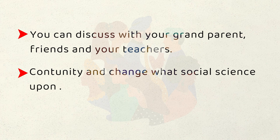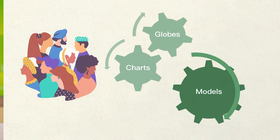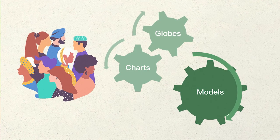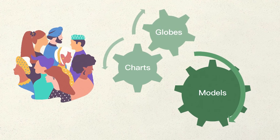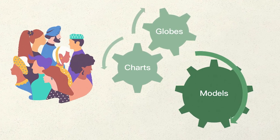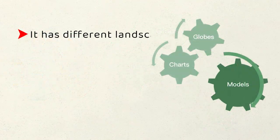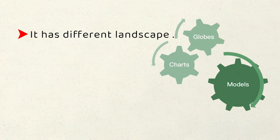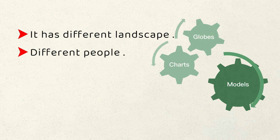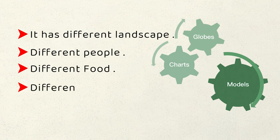We are a country blessed with diversities — diversities of cuisine, diversity of language, diversity of food. When you prepare models and charts, try to understand that every region of our country is unique. It has a different landscape. The lives and livelihoods of people are different. The food that they eat, the dress that they wear — all that you can map by making charts.